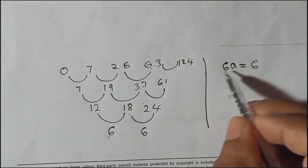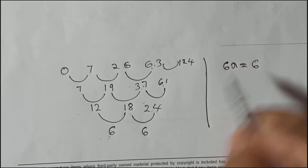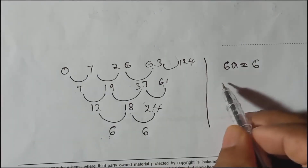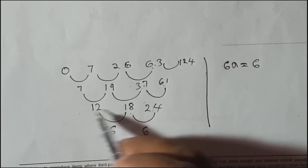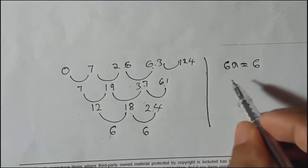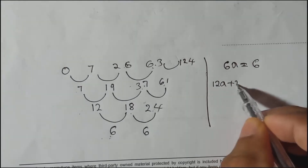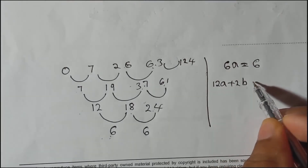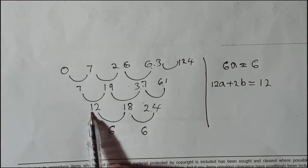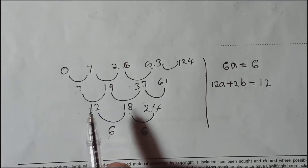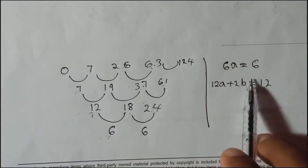Next formula: for any cubic sequence, 12a plus 2b equals the first term of the second difference. The second difference line's first term is 12. So 12a + 2b = 12.